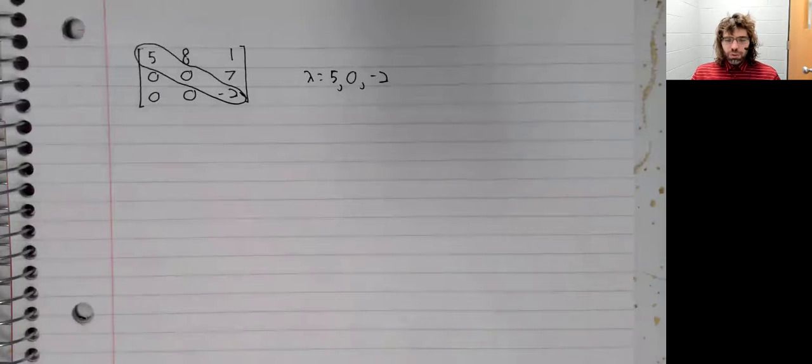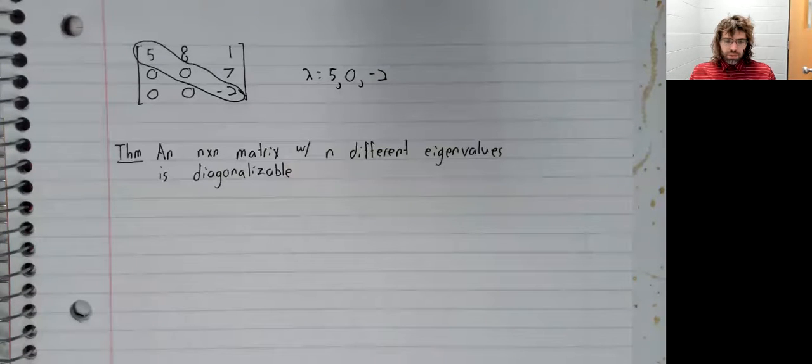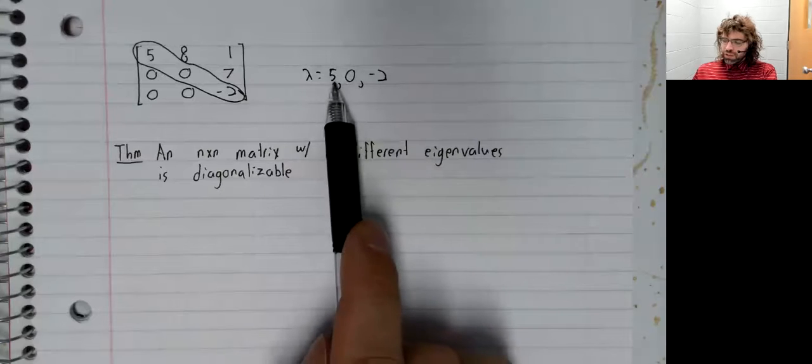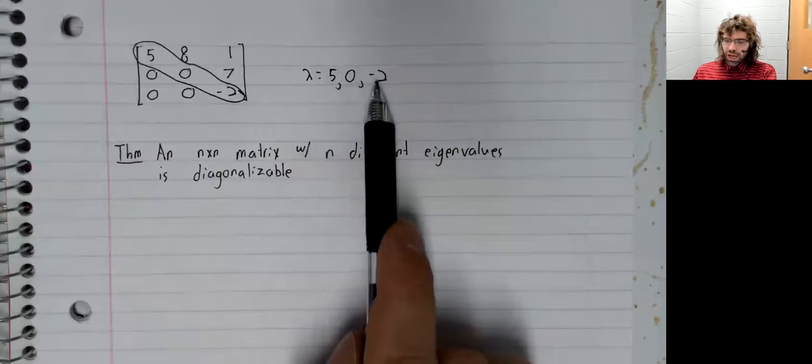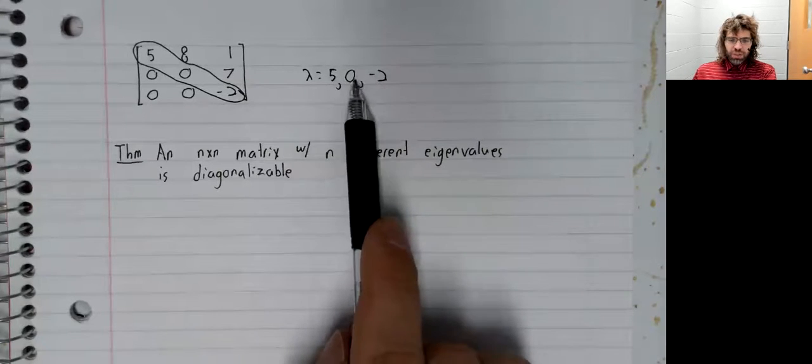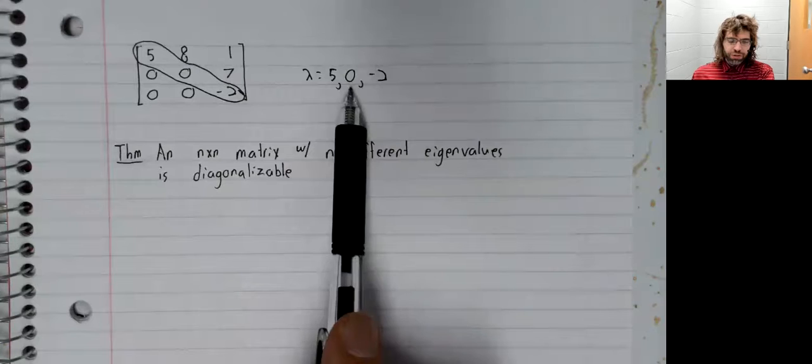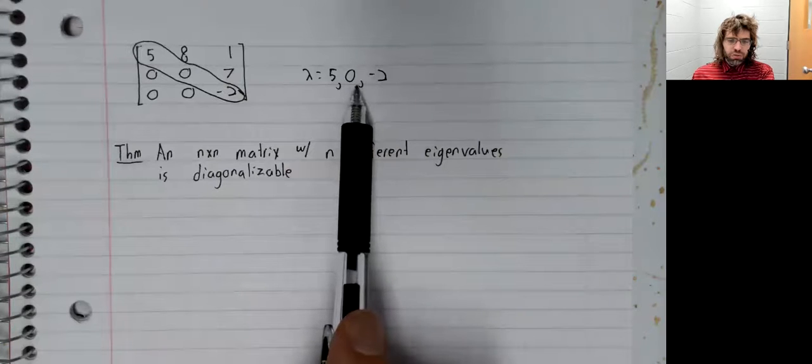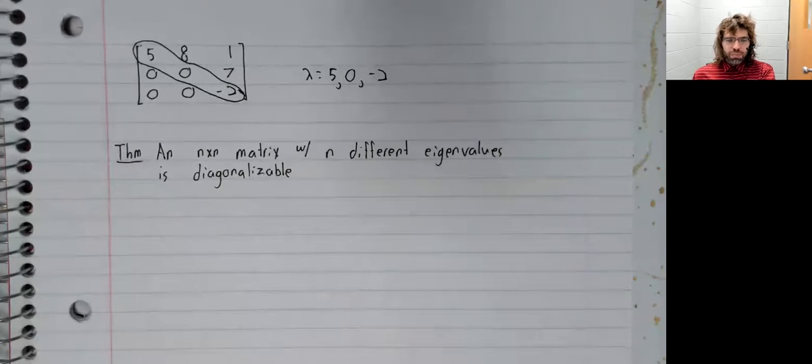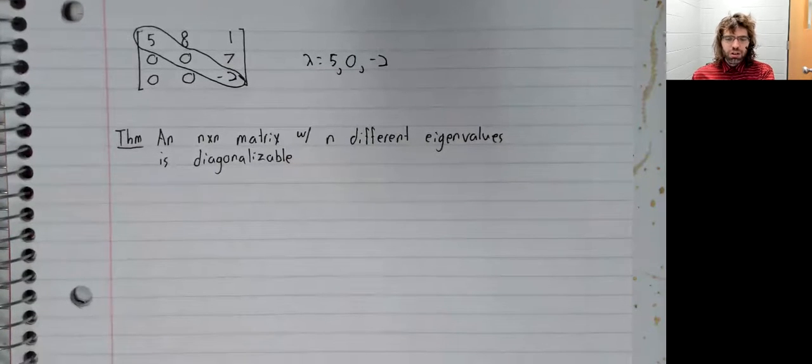We're going to get those. It's always true that if we have different eigenvalues, their eigenvectors are linearly independent. So if we have three different eigenvalues, we're guaranteed to be able to find three linearly independent eigenvectors.